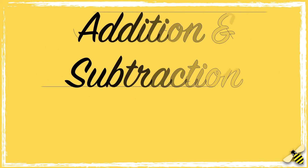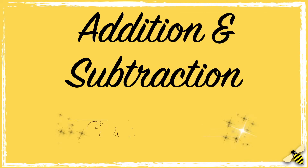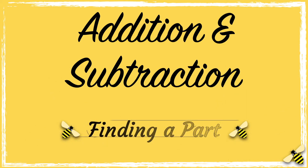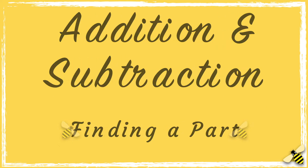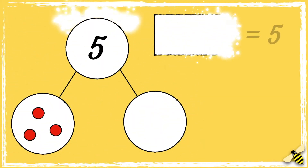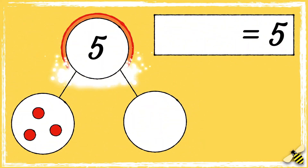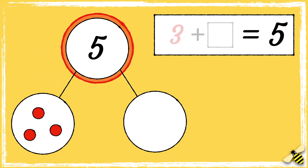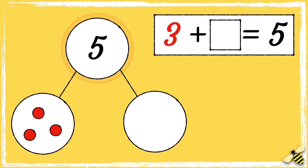In today's video we're going to be finding a missing part in a part-whole model. Here is a part-whole model. We know that five is the whole but we don't have all the parts. How can we find out the missing part?